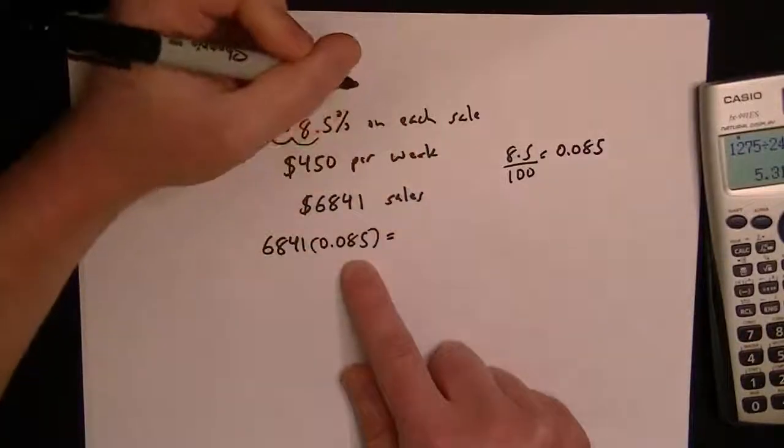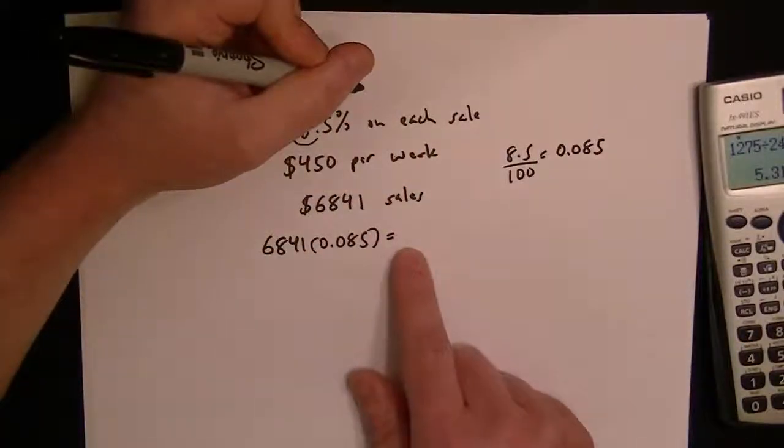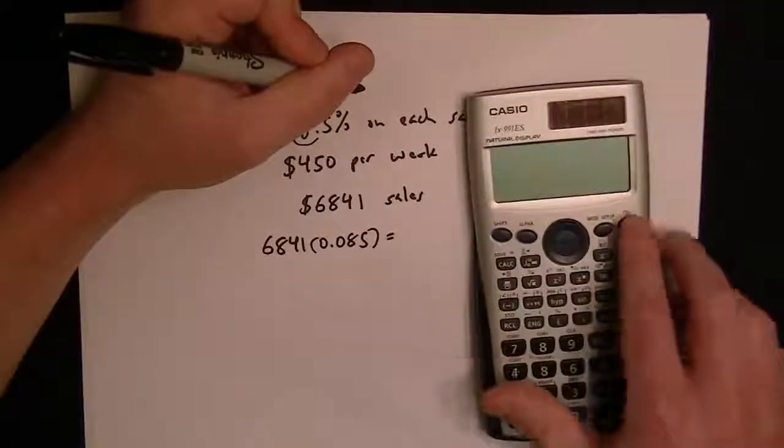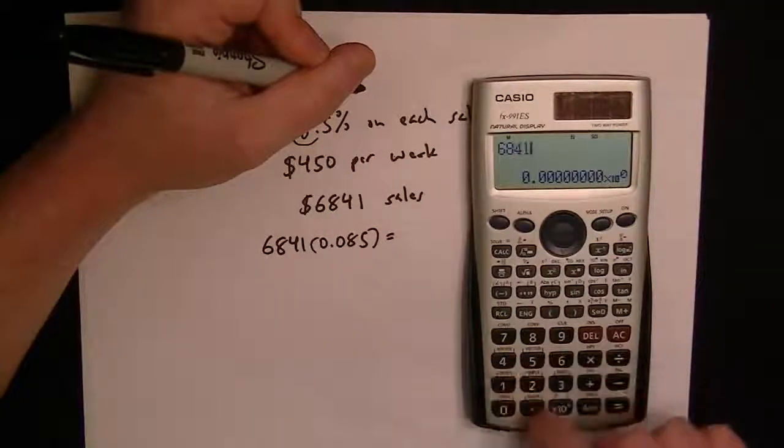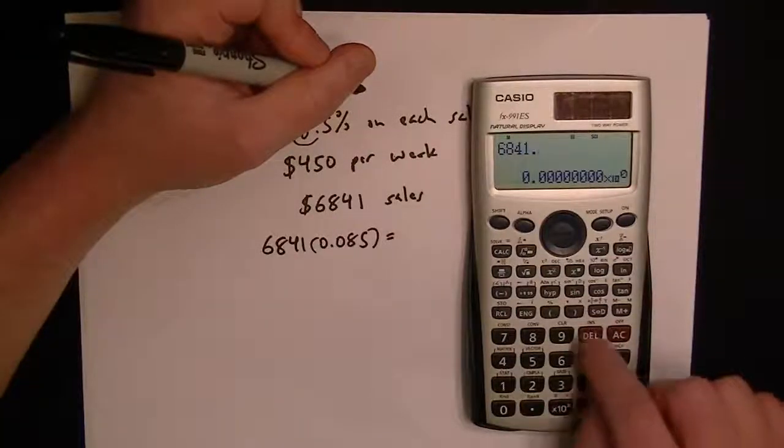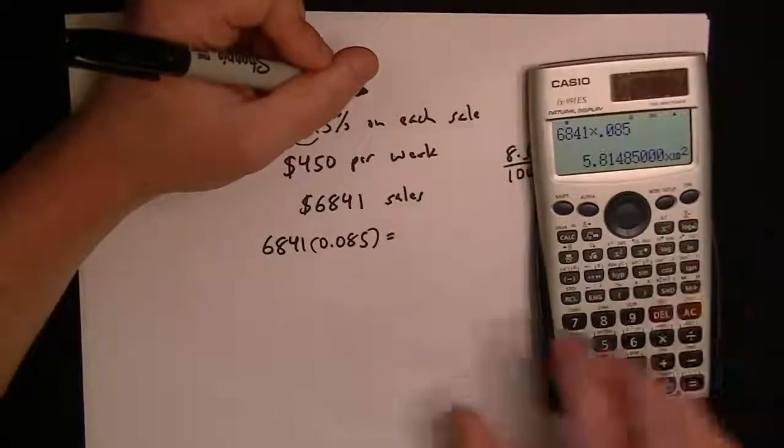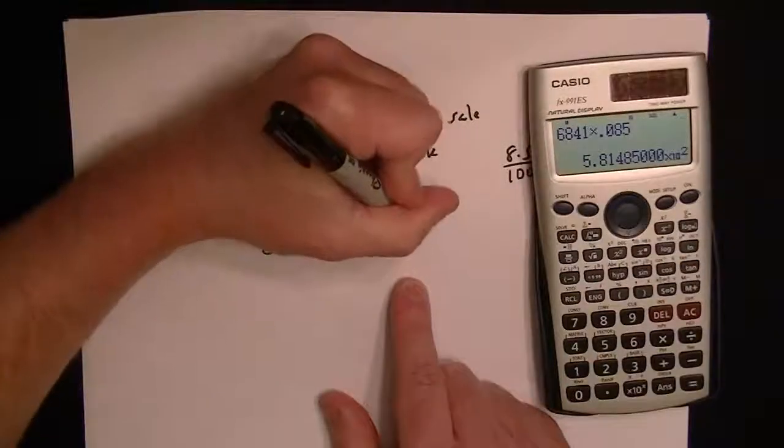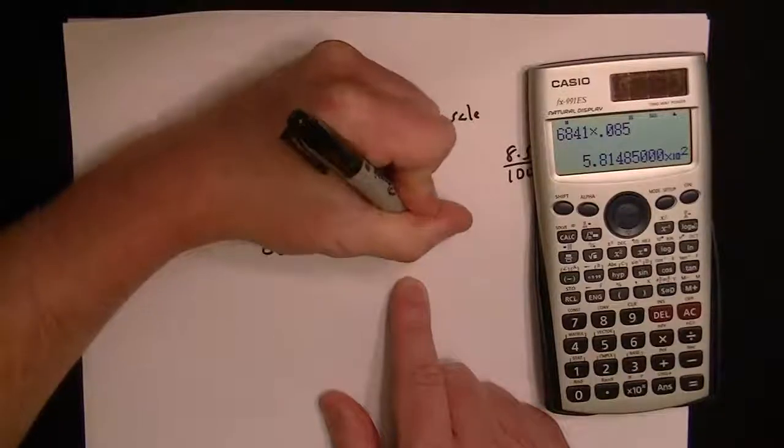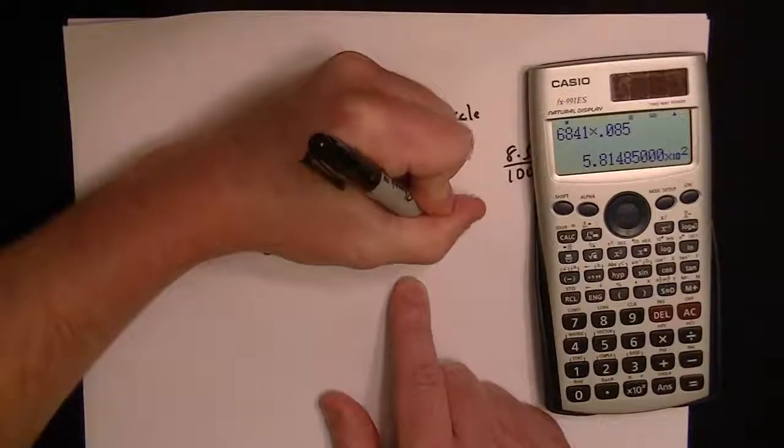And so this will give us the number of dollars he earned from his sales. So $6,841 times 0.085. So we get $581.49.